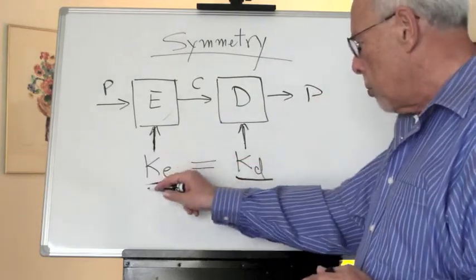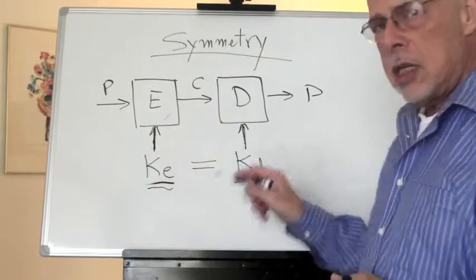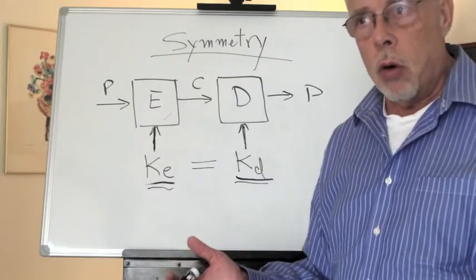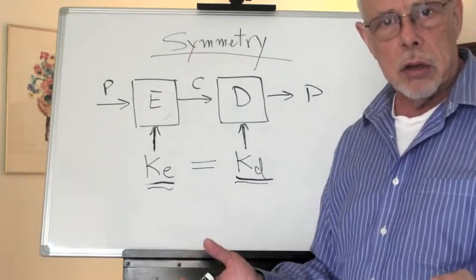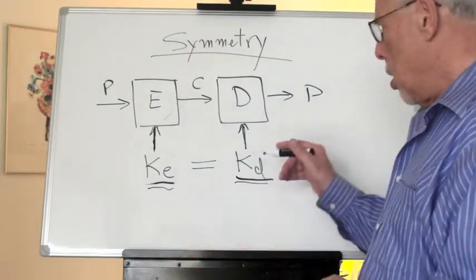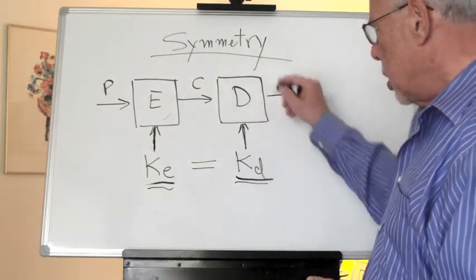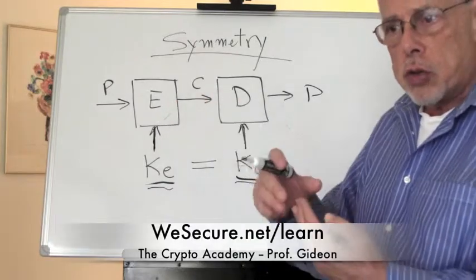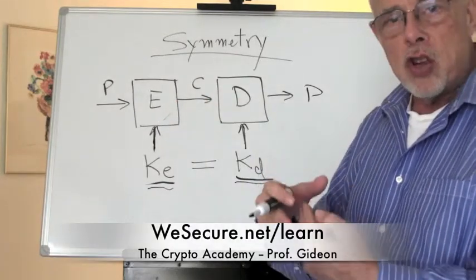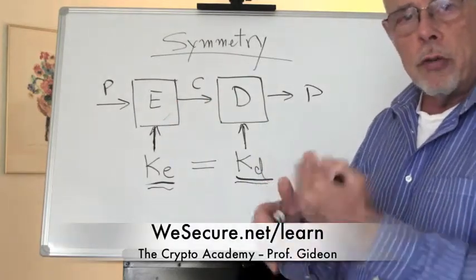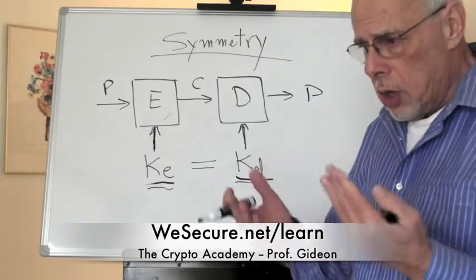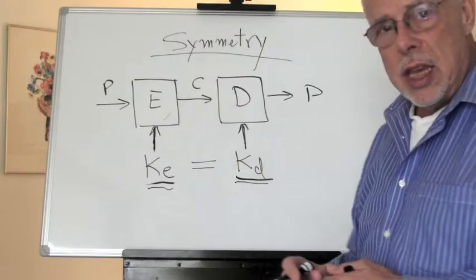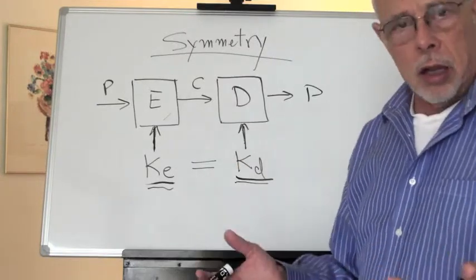And the assumption that prevails is that the two keys are the same, one and the same, or symmetric. Because this is undoing what this does. The decryption is operationally the undoing of the encryption. So it was reasonable to assume that those two keys are the same.